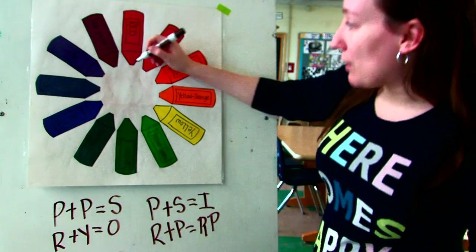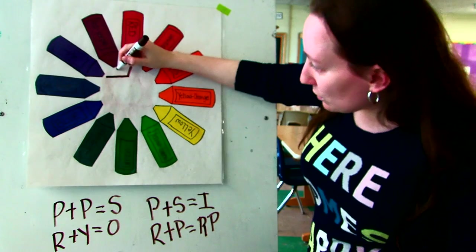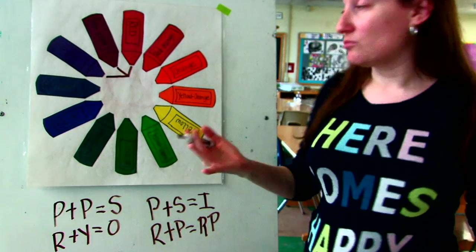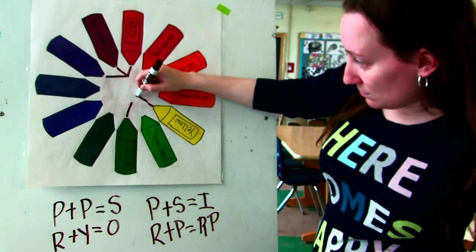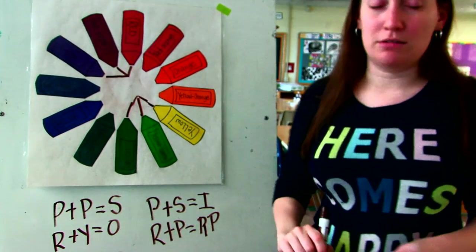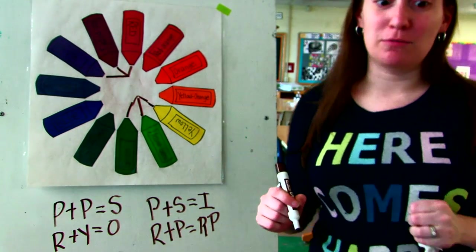So red plus purple equals red-purple, right? Yellow and green equals yellow-green. Sorry, it's been that type of morning.